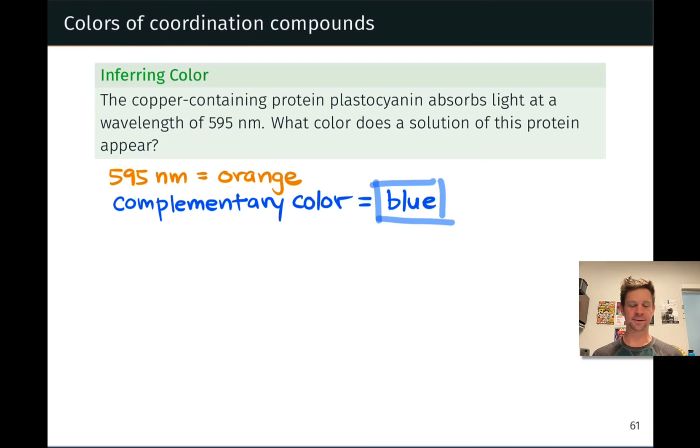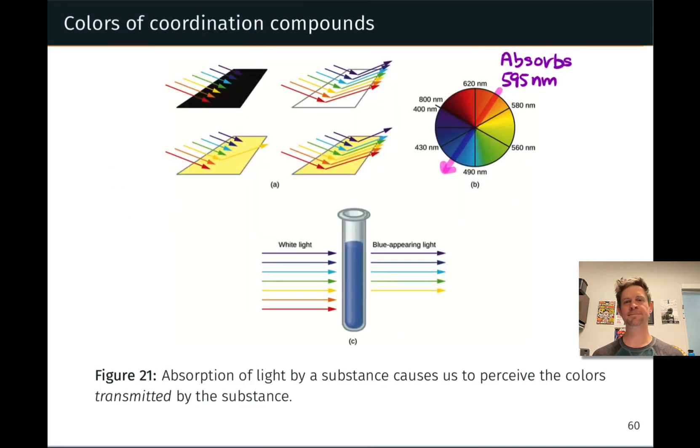The last thing I want to say about this is just to remind us to keep in mind that the field strength of the ligand can have an influence on the color of transition metal complexes. Ligand field strength relates to the size of the crystal field splitting. And that crystal field splitting energy is related to the wavelength of light absorbed.